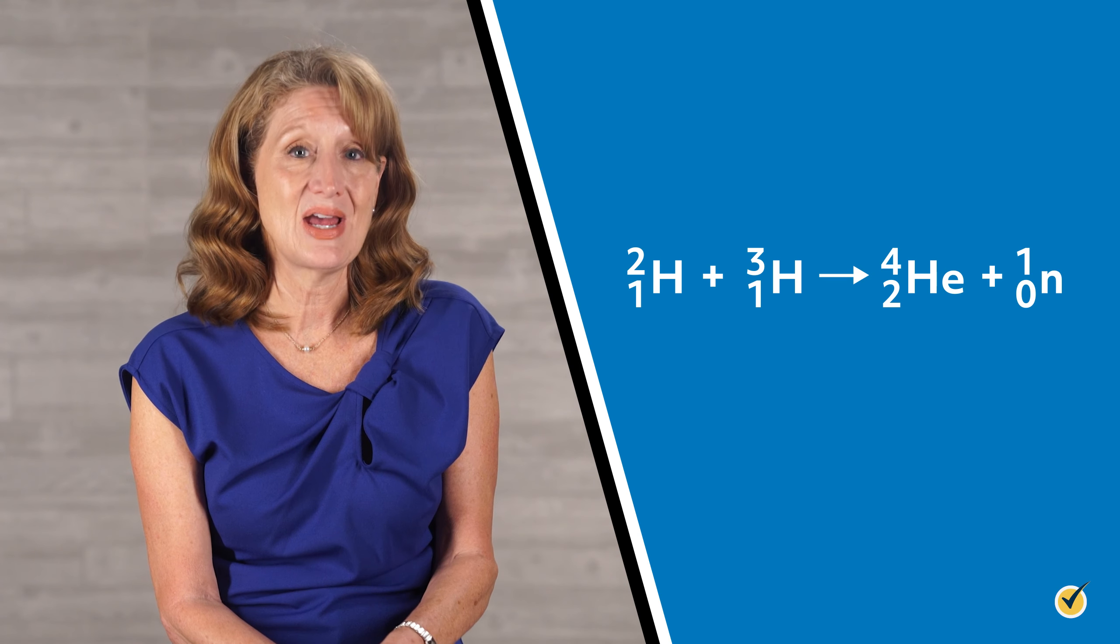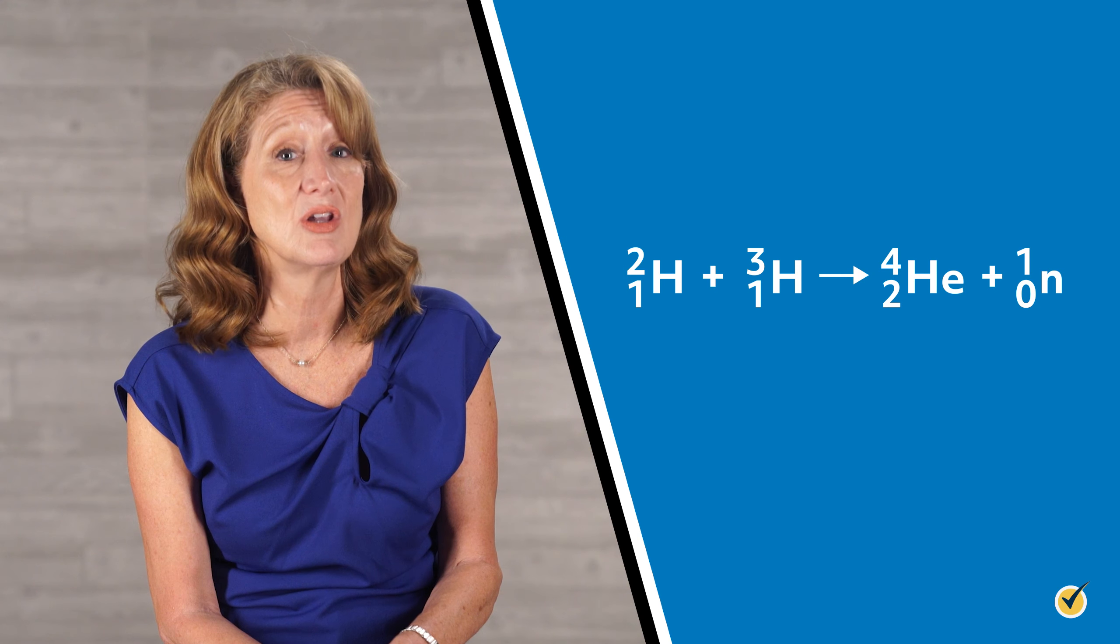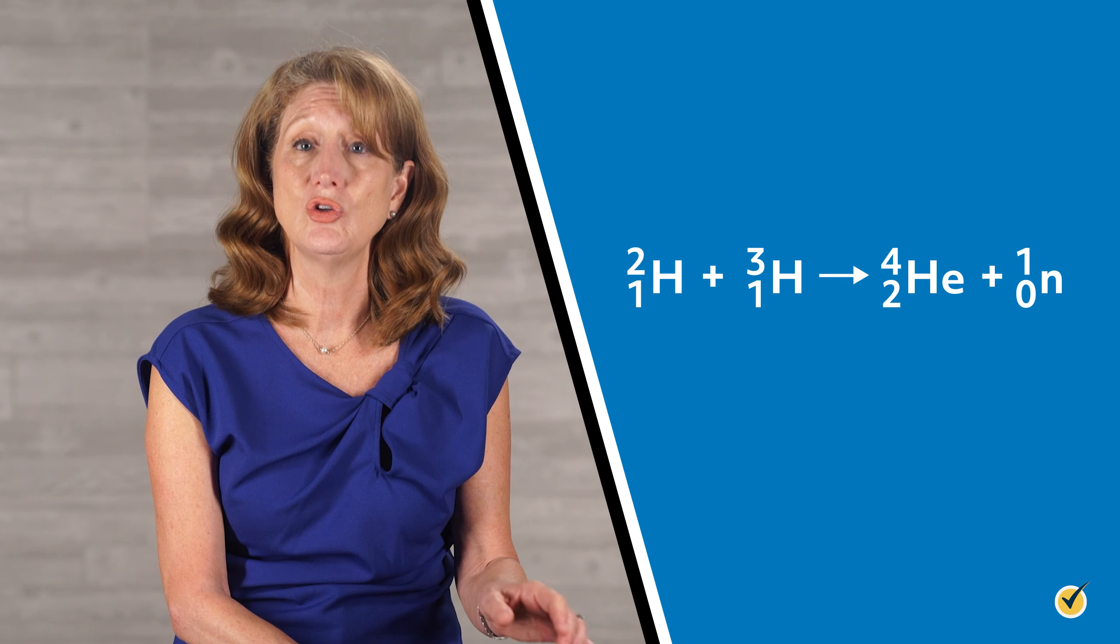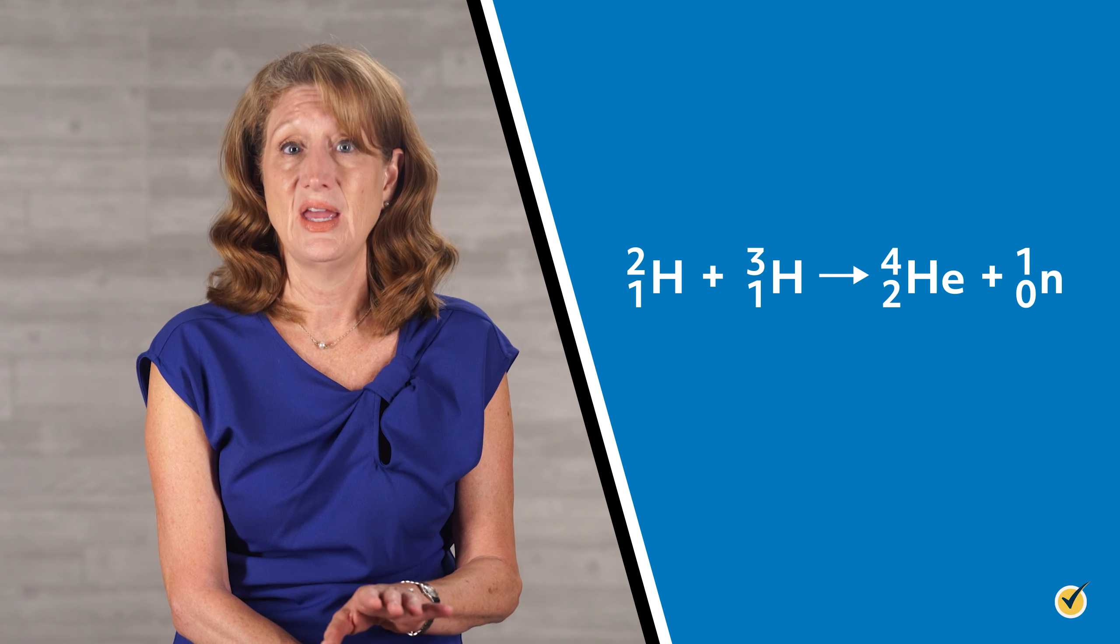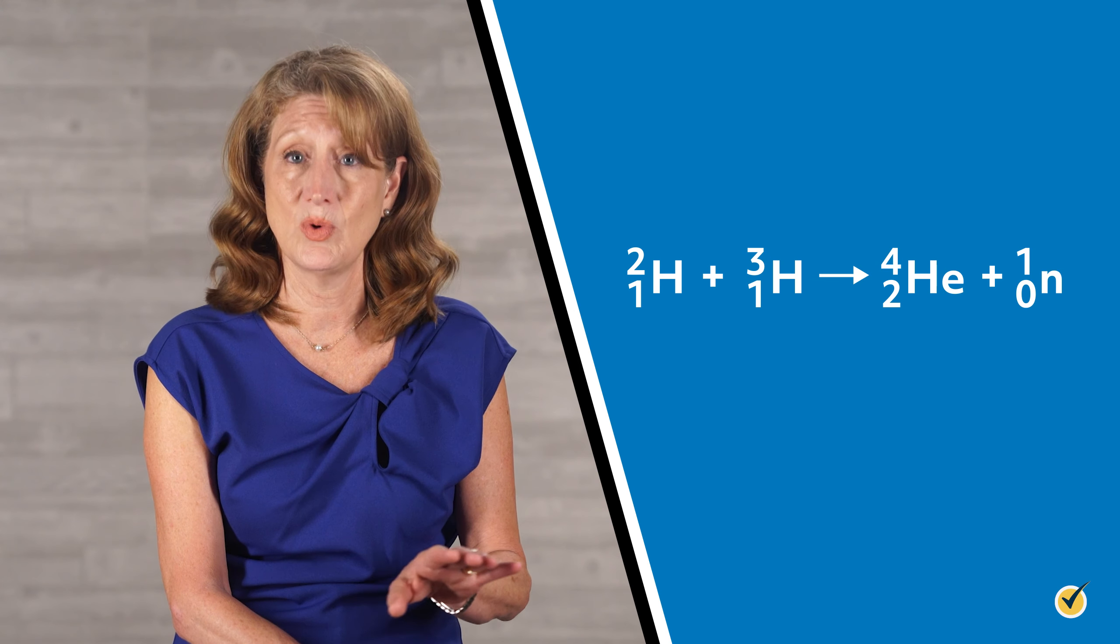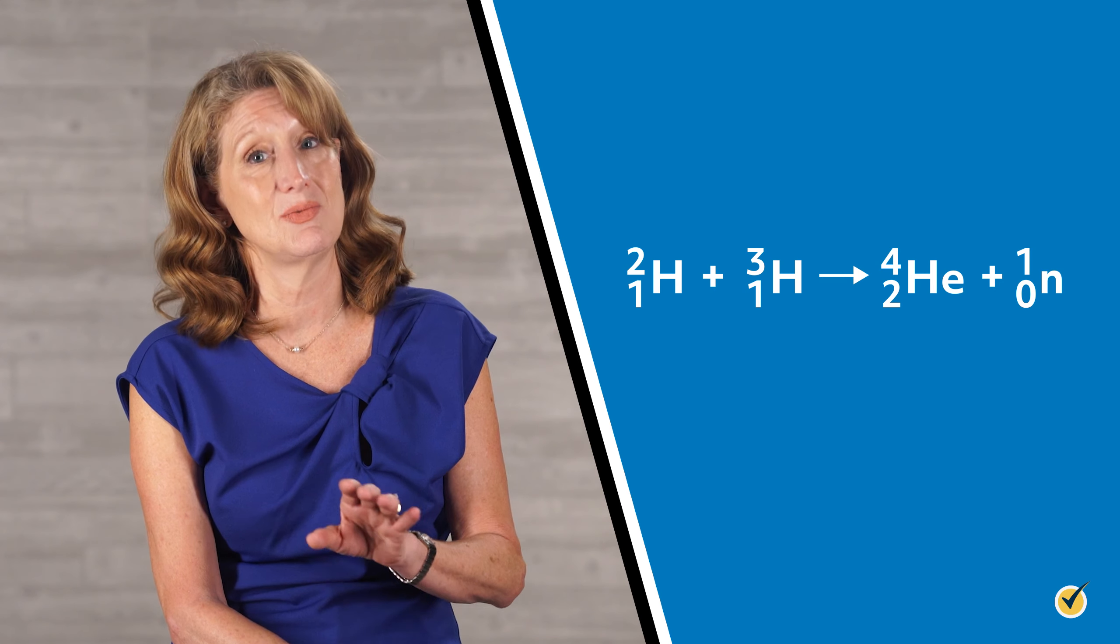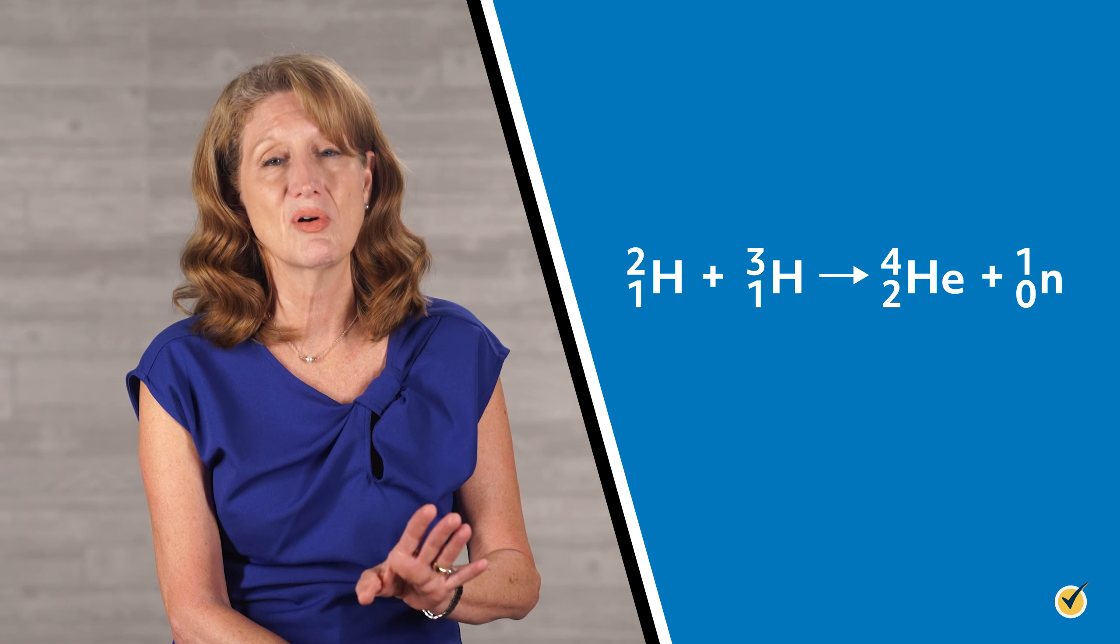Next, add the mass numbers to confirm that we haven't lost any neutrons. From the reactant side, 2 plus 3 equals 5. And from the product side, 4 plus 1 equals 5. So we started with 5 nucleons and ended with 5 nucleons. Perfect.